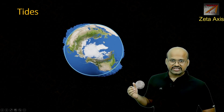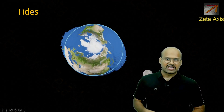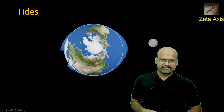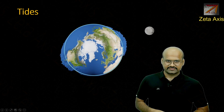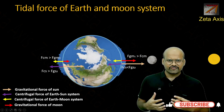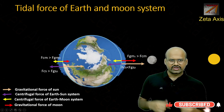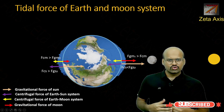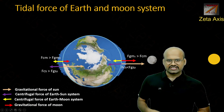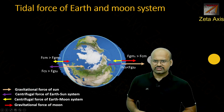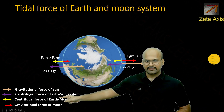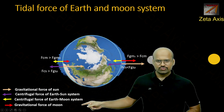The regions which face the sun or moon face higher tides, and the regions which are away from the moon or sun face lower levels of tides. We also saw different forces exerted by the moon and sun which cause tides — the two main forces were gravitational force and centrifugal force of the Earth-Moon system.